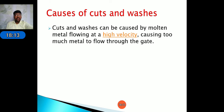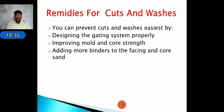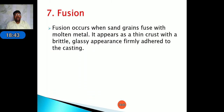Cuts and washes are caused by molten metal flowing at high velocity through the gate, creating turbulence that erodes the mold material. Remedies include: properly designing the gating system, improving mold and core strength, and adding more binders to the facing of cores.